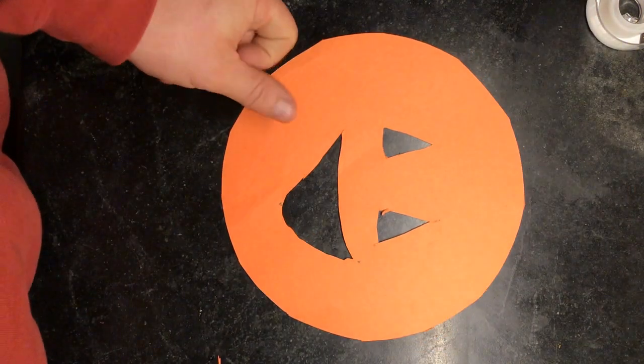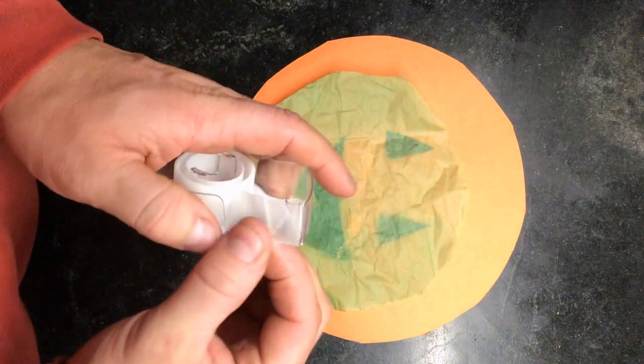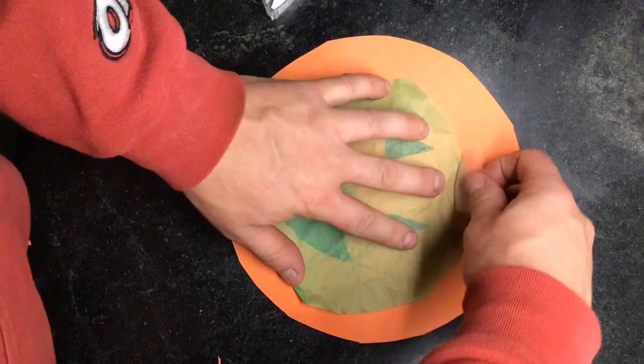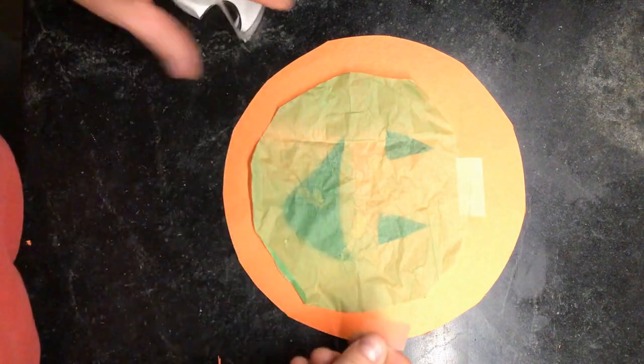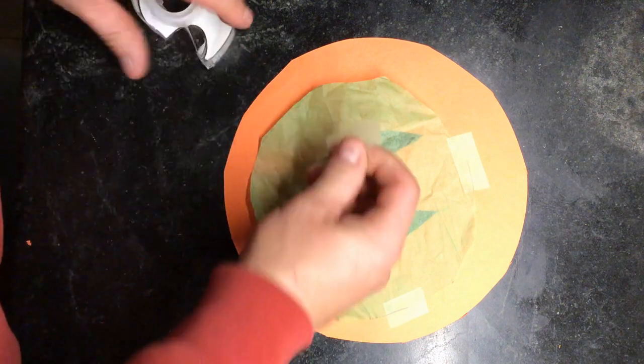Okay, next I'm ready to flip this over and tape a piece of tissue paper down to the back. I guess you could glue the tissue paper, but we're just going to put two or three pieces of tape to make sure our tissue paper is nice and flat.